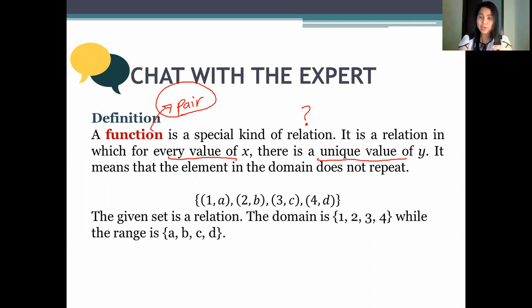Here's how I will simplify it. A function is a pair where the X coordinate will not repeat. Example, you look at the X, the first ones: 1, 2, 3, 4. The X coordinate does not repeat. So, we call it a function. Or another one: 1A, 2A, 3A, 4A. Ma'am, the A repeats. Yes, the A repeats. But you look at the X coordinates. We have 1, 2, 3, and 4. The X coordinates do not repeat. Therefore, we call this a function.